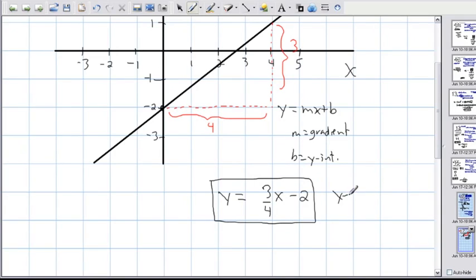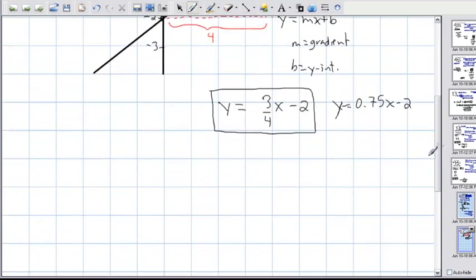Keep in mind you could also say that it's y equals 0.75x minus 2. If you wanted to you could also do that. What you could also do if you really felt like it, you could actually decide to get rid of this fraction by multiplying everything by 4.